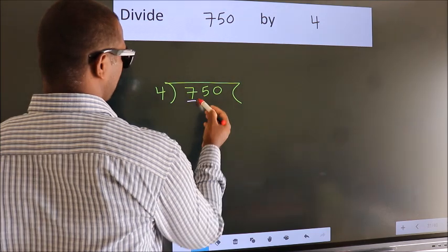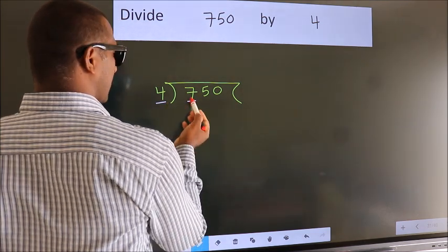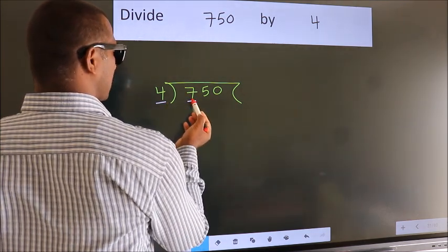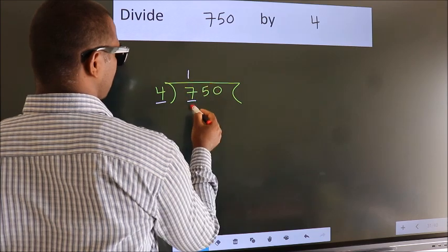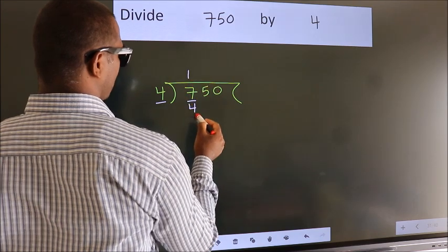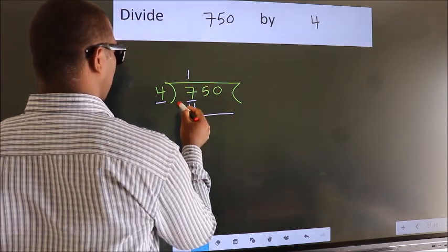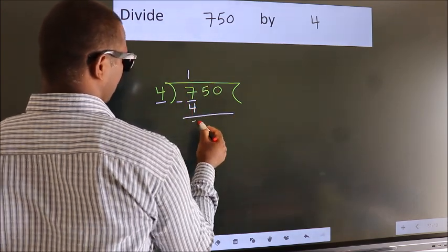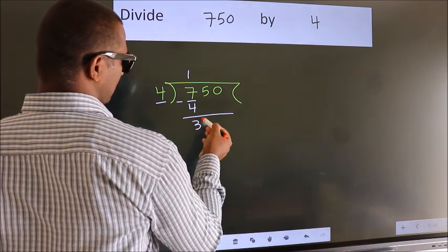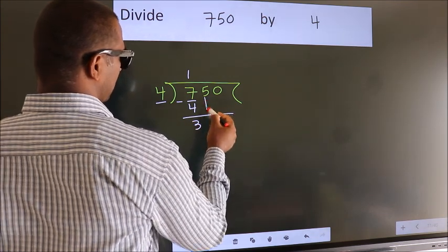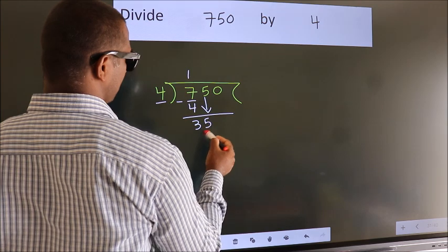Here we have 7, and here 4. A number close to 7 in the 4 times table is 4 once 4. Now we should subtract — we get 3. After this, bring down the beside number, so 5 down.